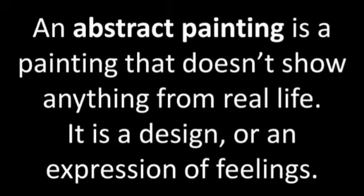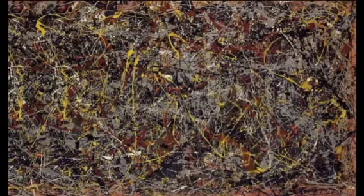An abstract painting is a painting that doesn't show anything from real life — it is a design or expression of feelings. This is an abstract painting by Jackson Pollock simply called Number Five. This abstract painting is called Carnival of Harlequin by Joan Miró.